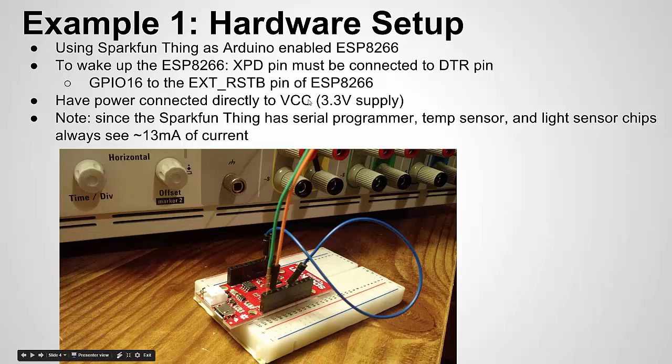For this example, I'm measuring the current draw directly from VCC because I don't want to go through the regulator. We're not going to see the lowest power draw the chip can achieve simply because on the Thing board there's a serial programmer, temp sensor, and light sensor, so all those use some power. I actually broke the power LED, but there's about 13 milliamps overhead of current that we're going to see when I make these measurements on the Thing board. Let's look at the code for the first example.